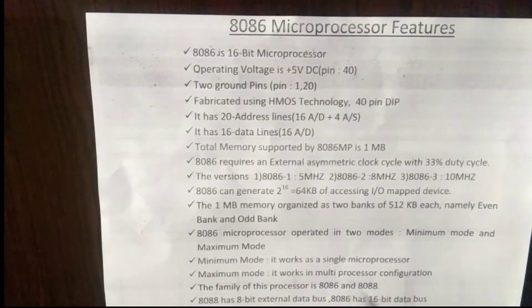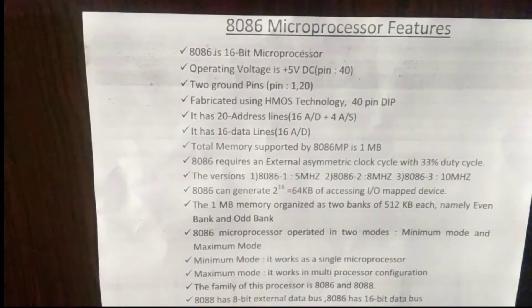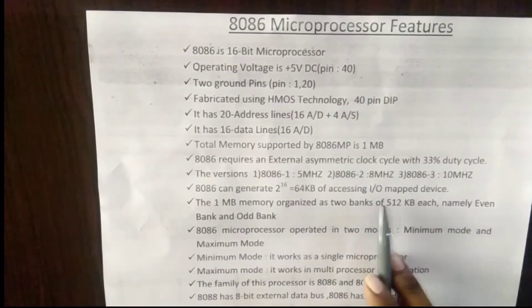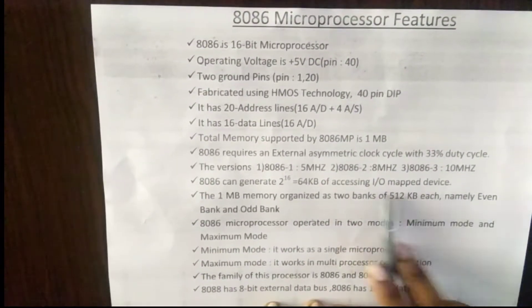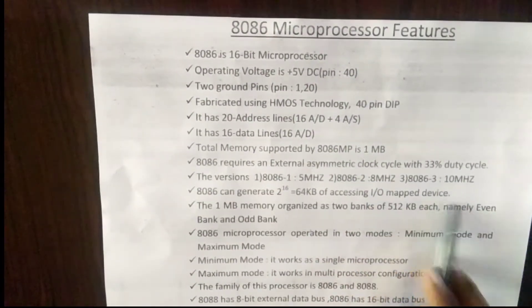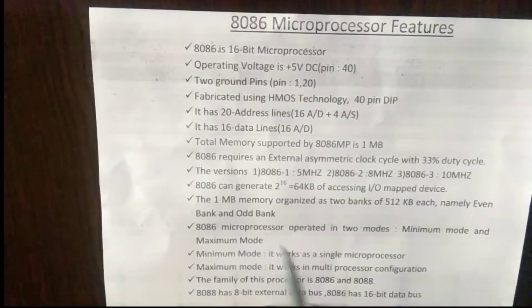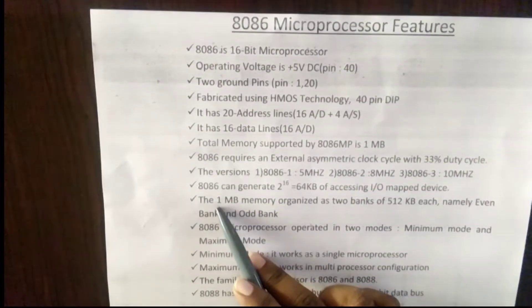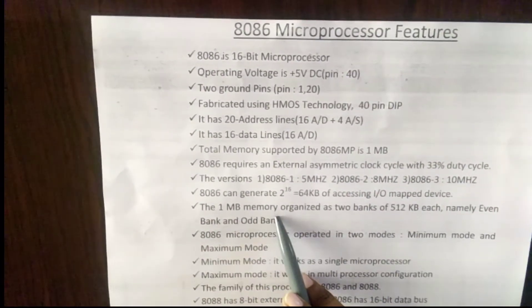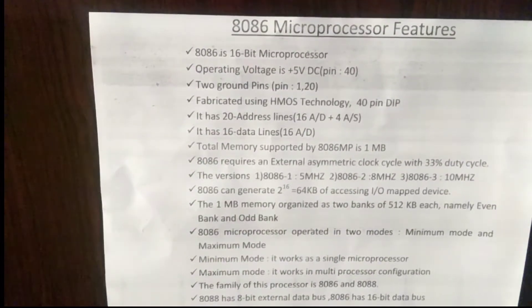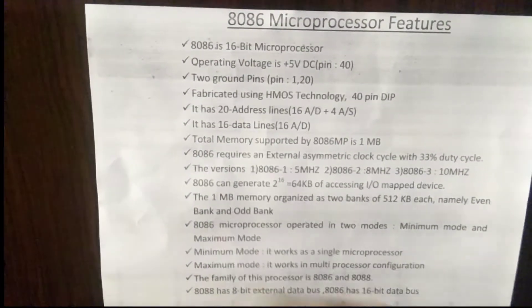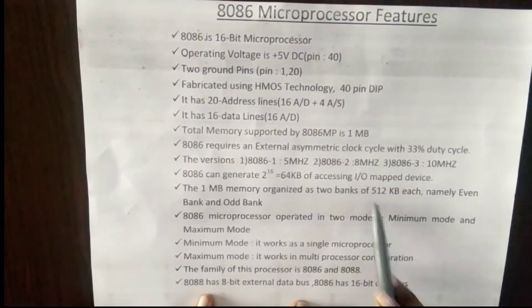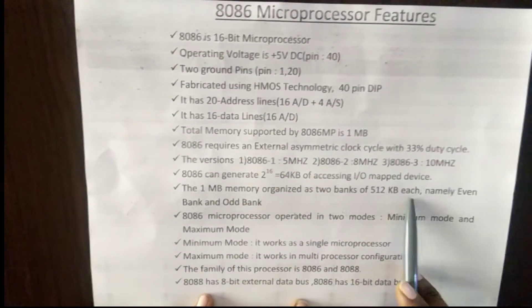The 8086 microprocessor can access 64 KB of I/O mapped devices. The 1 MB of memory (2 to the power of 20) is organized into two banks: an even bank and an odd bank, each with a size of 512 KB.